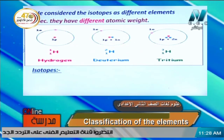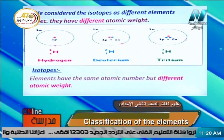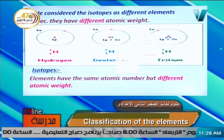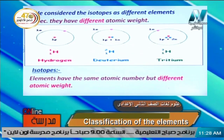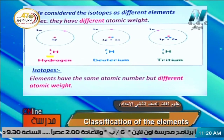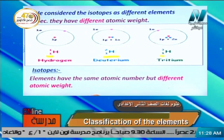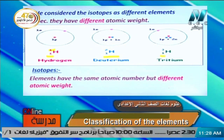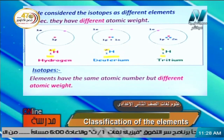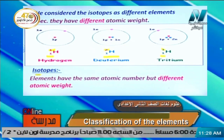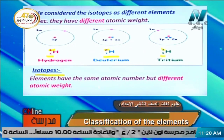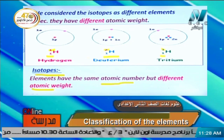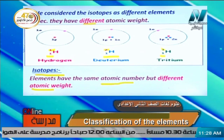What is meant by isotopes? Isotopes are elements that have the same atomic number but different mass numbers. As we see here, hydrogen, deuterium, and tritium all have atomic number 1, but mass numbers of 1, 2, and 3 respectively. So isotopes share the same atomic number but have different atomic weights. Mendeleev considered them as different elements because they have different atomic weights.